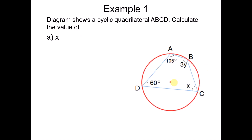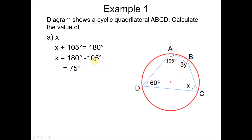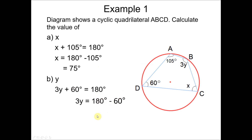Now let's do some exercises. The diagram shows a cyclic quadrilateral ABCD. Calculate the value of X. Since opposite angles A and C sum to 180, X equals 180 minus 105, which is 75 degrees. To find Y: the opposite angles sum to 180, so 3Y plus 60 equals 180. Therefore 3Y equals 120, divided by 3 gives Y equals 40 degrees.